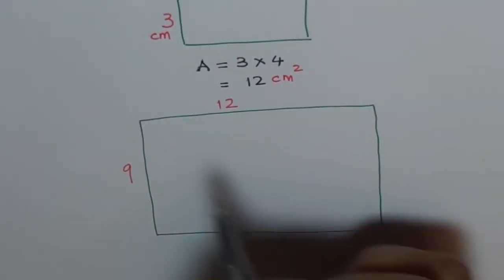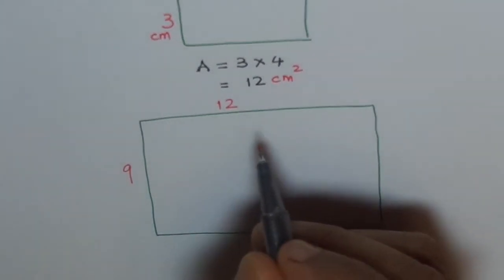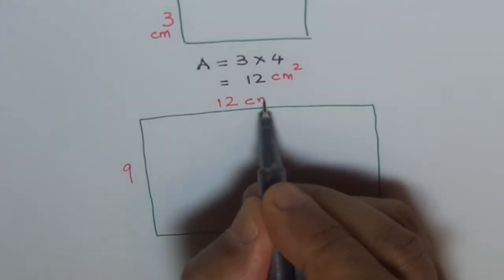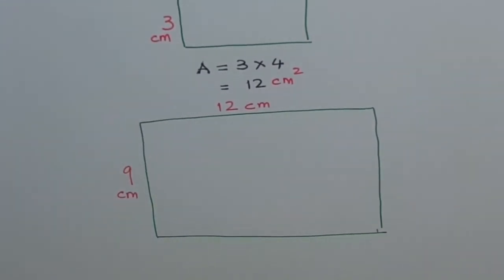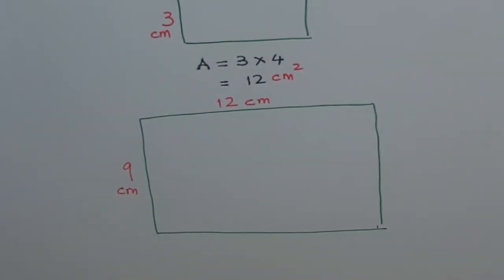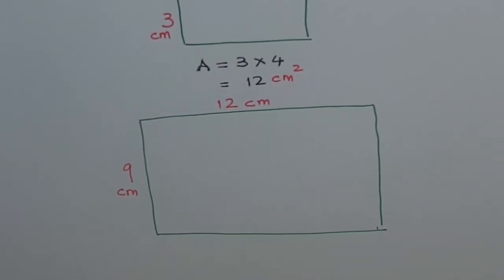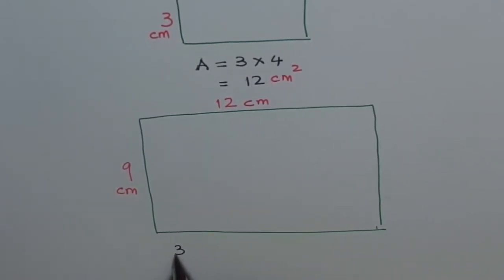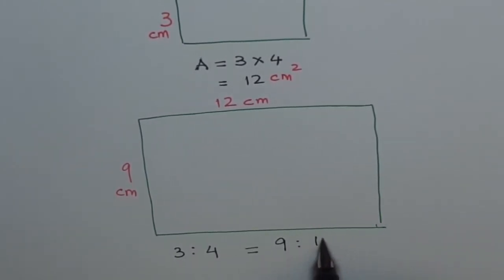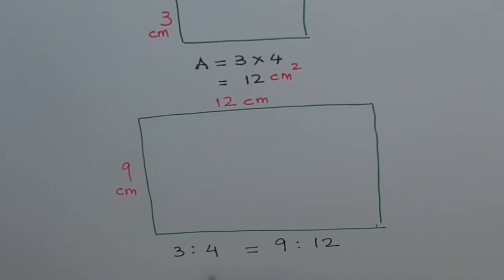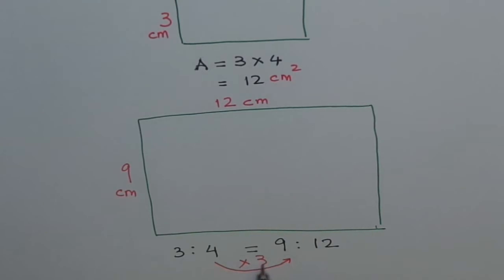This is not to the scale, 12 cm is pretty long, but let's assume that this is 12 cm and this is 9 cm. So what did we do? We scaled our picture 3 times. In terms of ratio, we had a picture which was 3 is to 4. We scaled it and made it 9 is to 12. How did we do this? We times both by the same number, and this time it was times by 3.